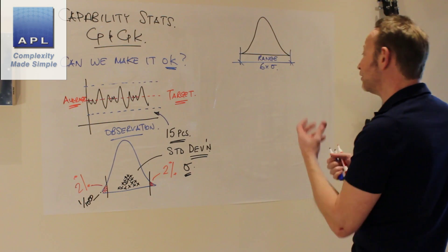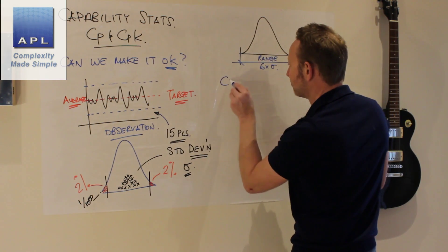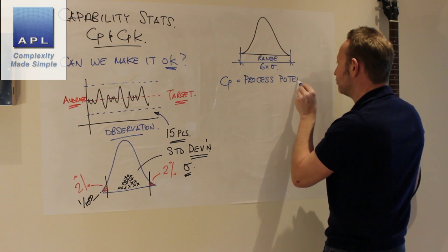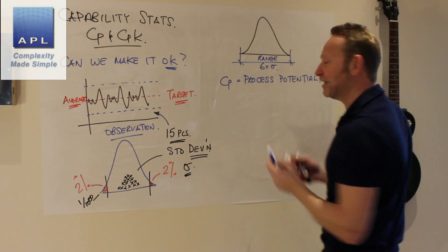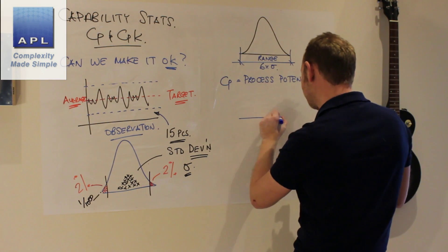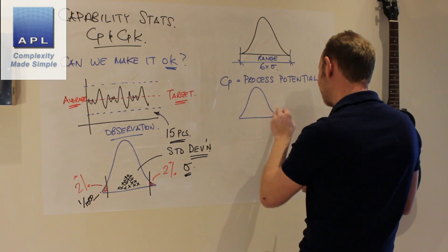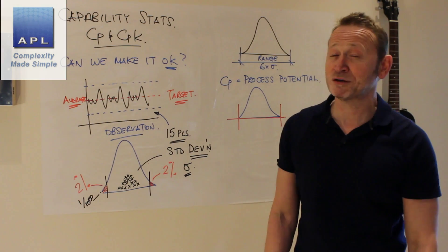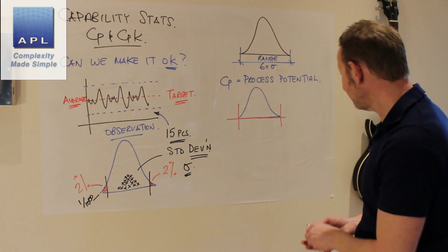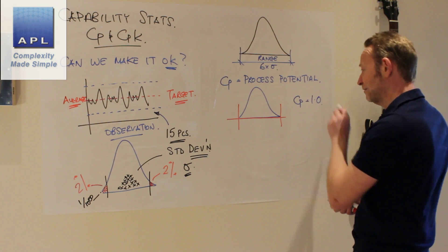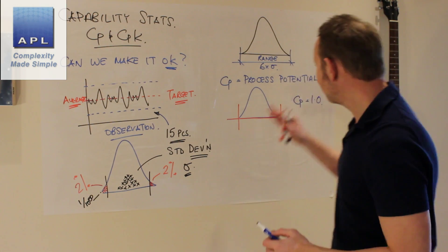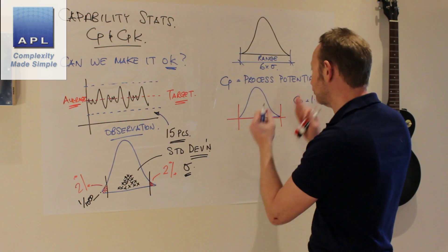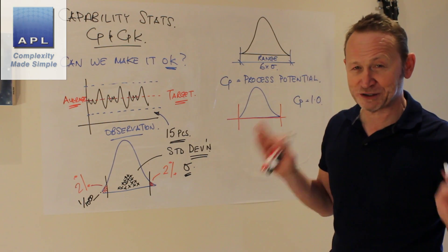CP is known as the process potential. All it basically says is: does my process potentially fit inside my tolerances? Draw a distribution, put some tolerances on the shape, and ask: how many times does the big blue thing fit inside those red lines? If it fits inside once, that's a CP of 1. If it fits inside twice, we have a potential equal to 2. CP is just width versus width — the width of the tolerance versus the width of the process. Potentially, can we fit?